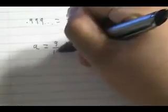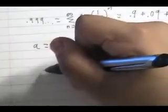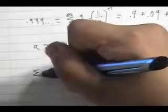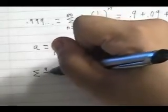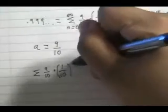This is a geometric series with the first term equaling 9 tenths and the ratio between terms equaling 1 tenth. If we plug that into the equation for the sum of a geometric series, a over 1 minus r, we get that the sum of our geometric series is 1.